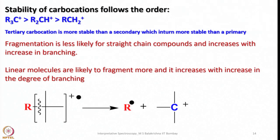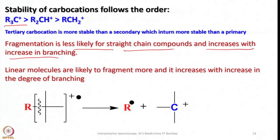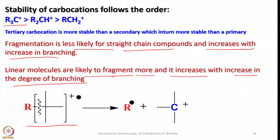Stability of carbocations follows the order: tertiary > secondary > primary. Fragmentation is less likely for straight-chain compounds and increases with degree of branching. So linear molecules show simpler spectra (like pentane, decane), while branching increases fragmentation. For example, a radical can form and give a carbocation through bond cleavage.